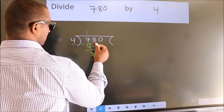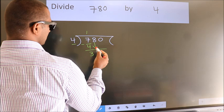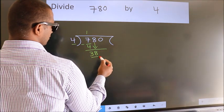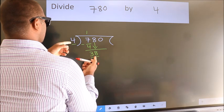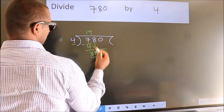After this, bring down the next number. So, 8 down. So, 38. A number close to 38 in the 4 table is 4 nines 36.